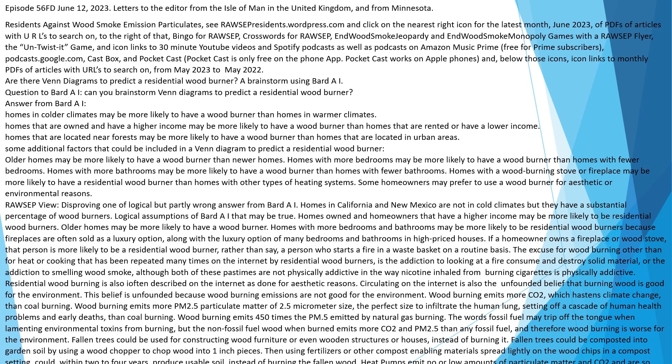Homes in colder climates may be more likely to have a wood burner than homes in warmer climates. Homes that are owned and have a higher income may be more likely to have a wood burner than homes that are rented or have a lower income. Homes located near forests may be more likely to have a wood burner than homes in urban areas. Some additional factors that could be included in a Venn Diagram: older homes may be more likely to have a wood burner than newer homes.